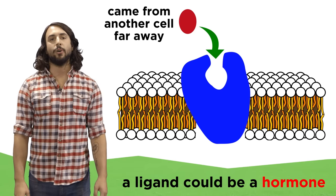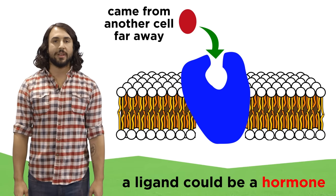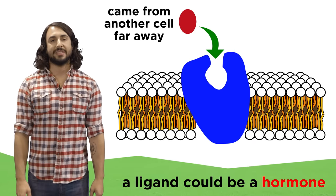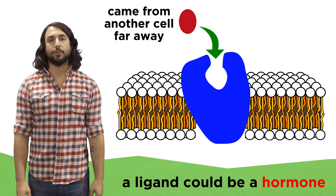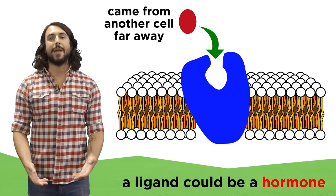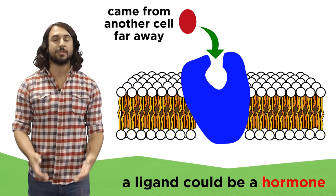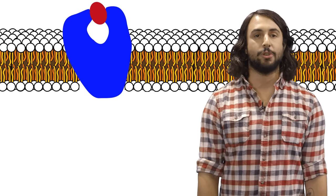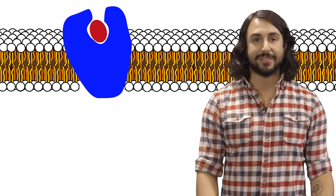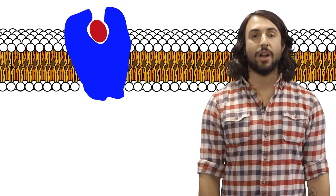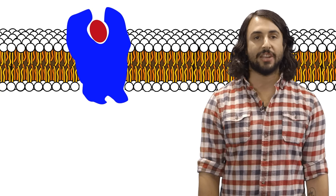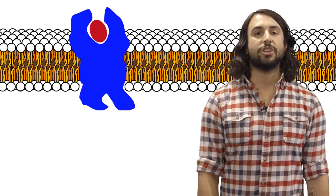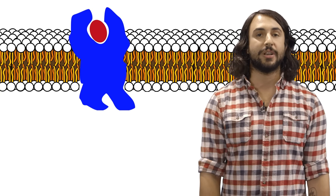These ligands could be something like a hormone that was secreted by a glandular cell far away, that will receive the message sent by the other cell, and this message may or may not be specific to this particular type of cell. Once this molecule reaches the receptor, it will bind to the active site, where it will cause a conformational change in the receptor that will trigger some kind of response, which can fall into one of a few different categories.